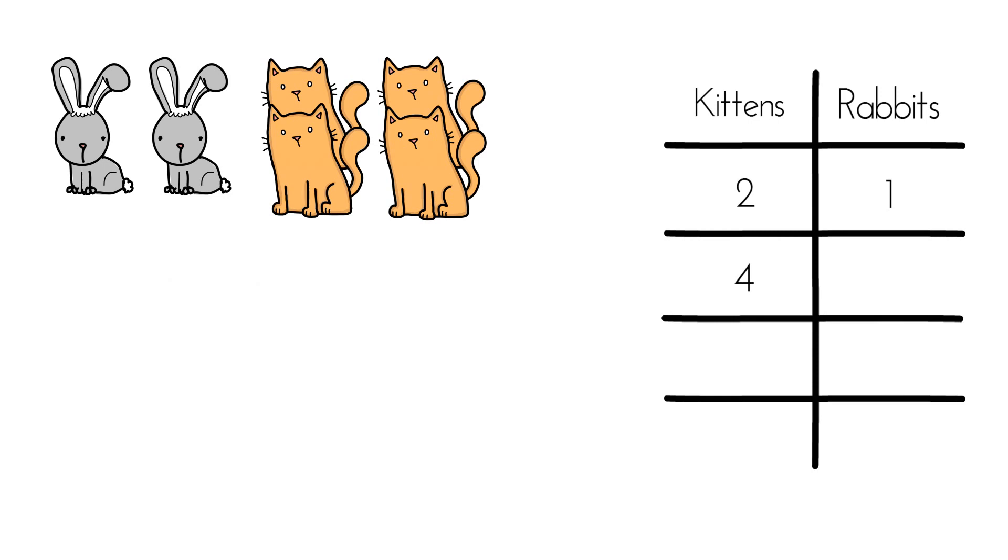Two rabbits for every four kittens is the same as one rabbit for every two kittens, or four rabbits for every eight kittens, or five rabbits for every ten kittens.